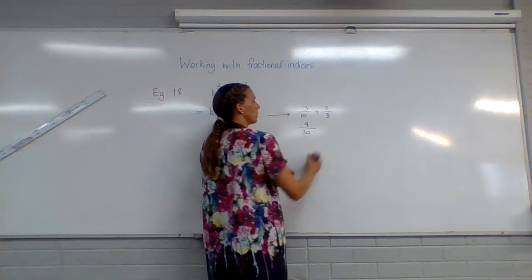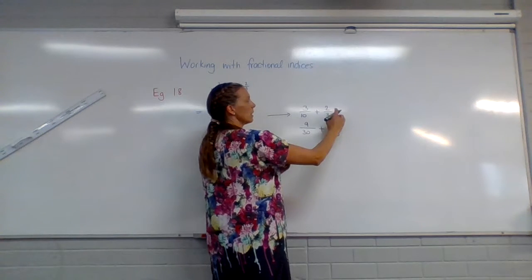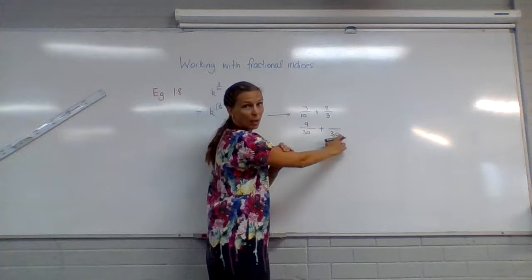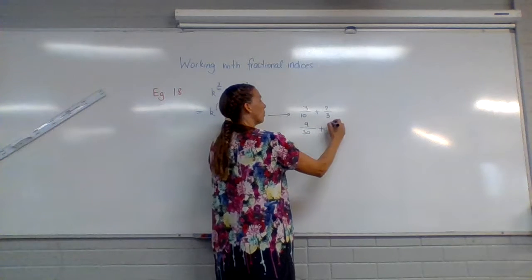So that would be 9 on 30 plus... How do I... I want the denominator to be 30. To get from 3 to 30, I multiply by 10. So if I did that to the bottom, I have to do it to the top. So 20.